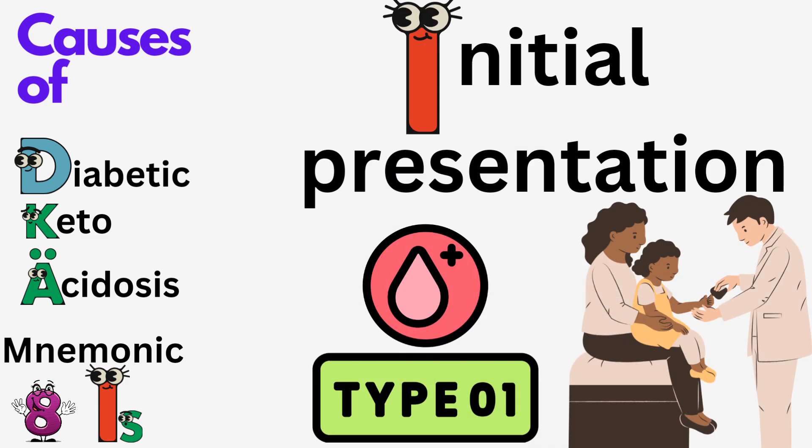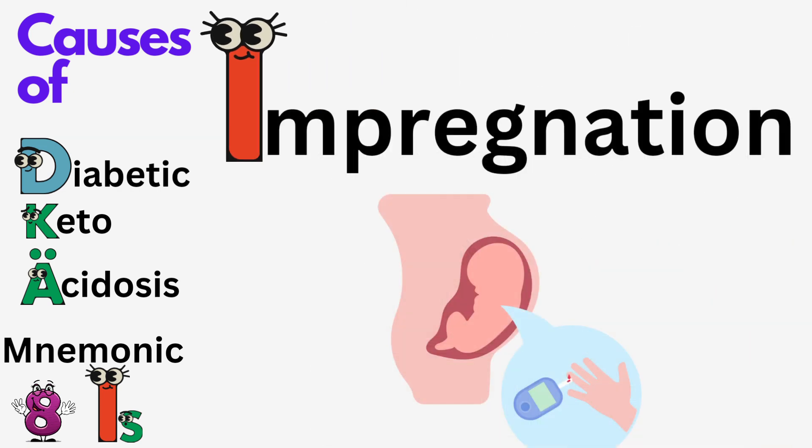6. Initial presentation. Recognize that young children may experience their first instance of DKA as an initial presentation. 7. Impregnation. Be aware that the increased metabolic demands of pregnancy can potentially trigger DKA in pregnant individuals.